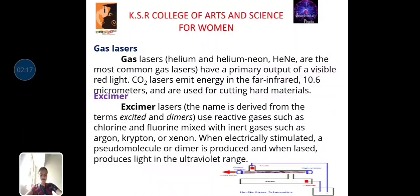Next, one is the excimer. Excimer laser, the name is derived from the terms excited and dimers. Use reactive gases such as chlorine and fluorine mixed with inert gases such as argon, krypton or xenon. When electrically stimulated, a pseudo-molecule or dimer is produced and when lased, produces light in the ultraviolet range.